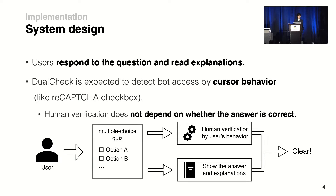This is the design of Dual Check. Dual Check asks users to respond to a question about online safety, and users can learn by answering the question and reading the explanations. At the same time, Dual Check performs human verification based on the user's casual behavior, like reCAPTCHA V2. Importantly, the human verification process does not depend on whether the user answered correctly.